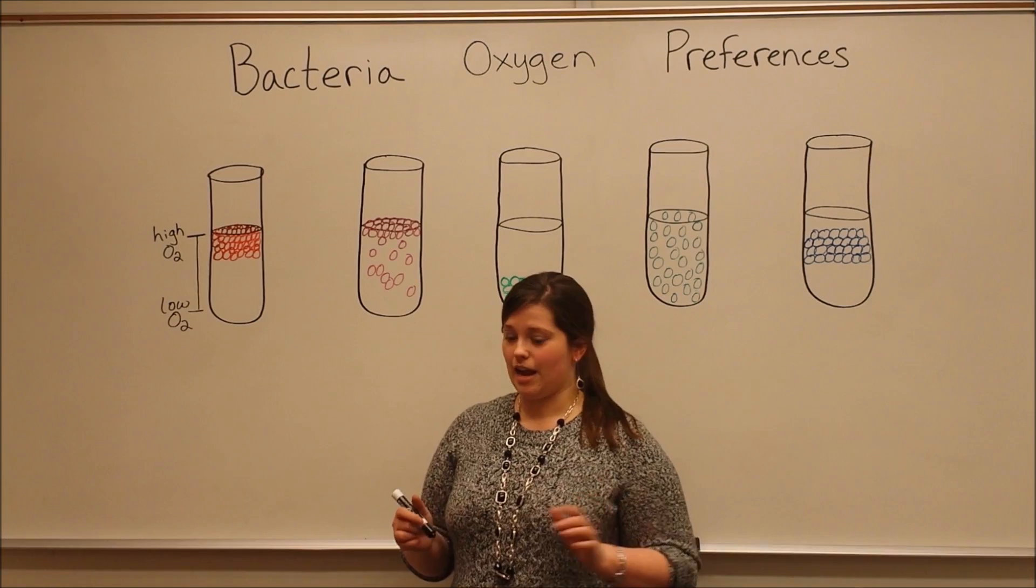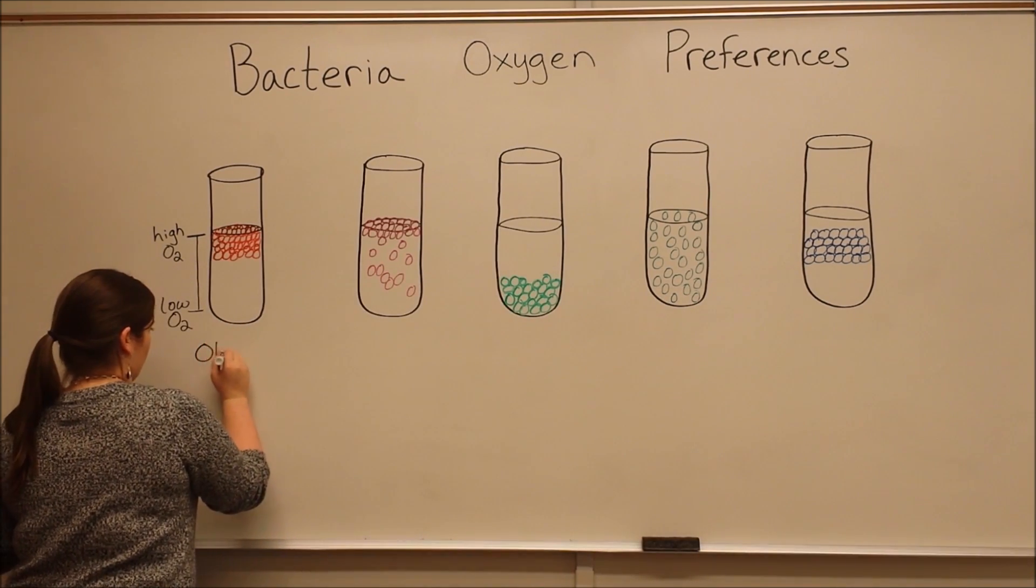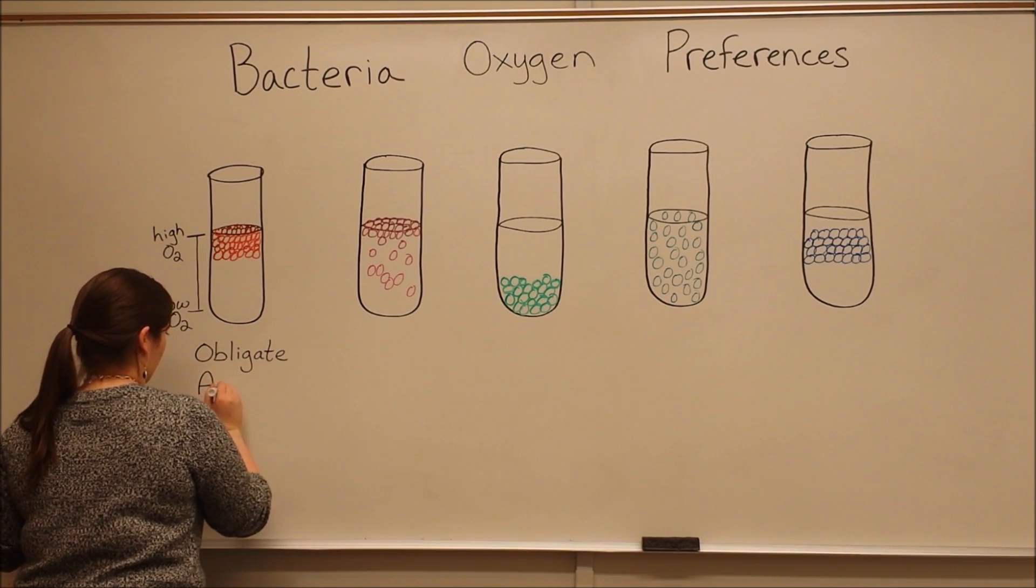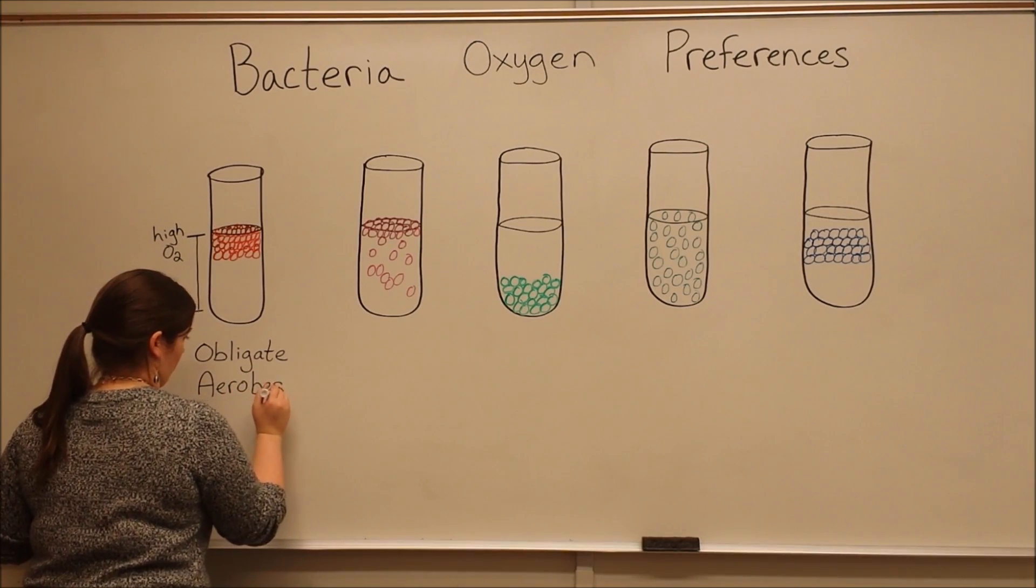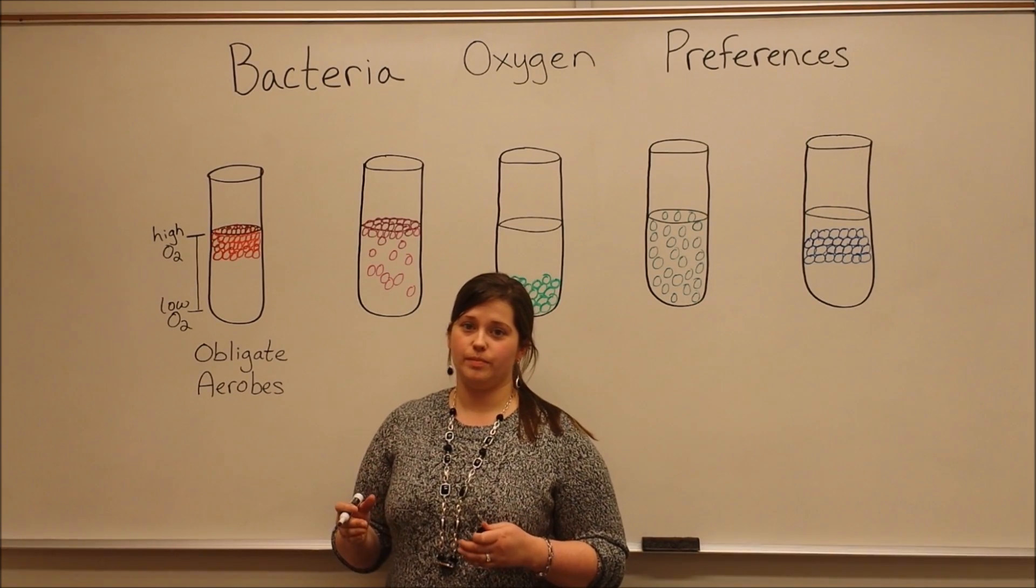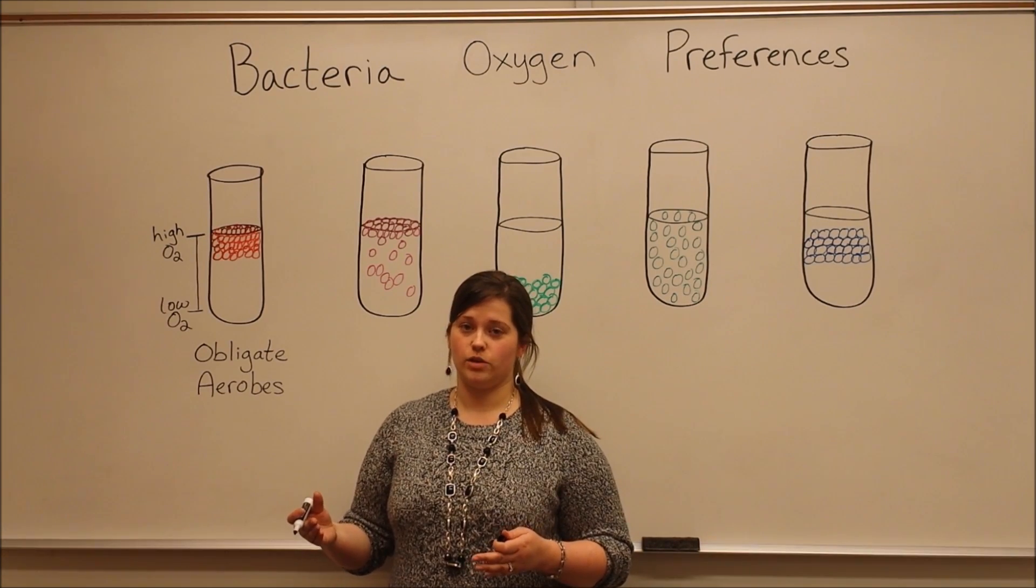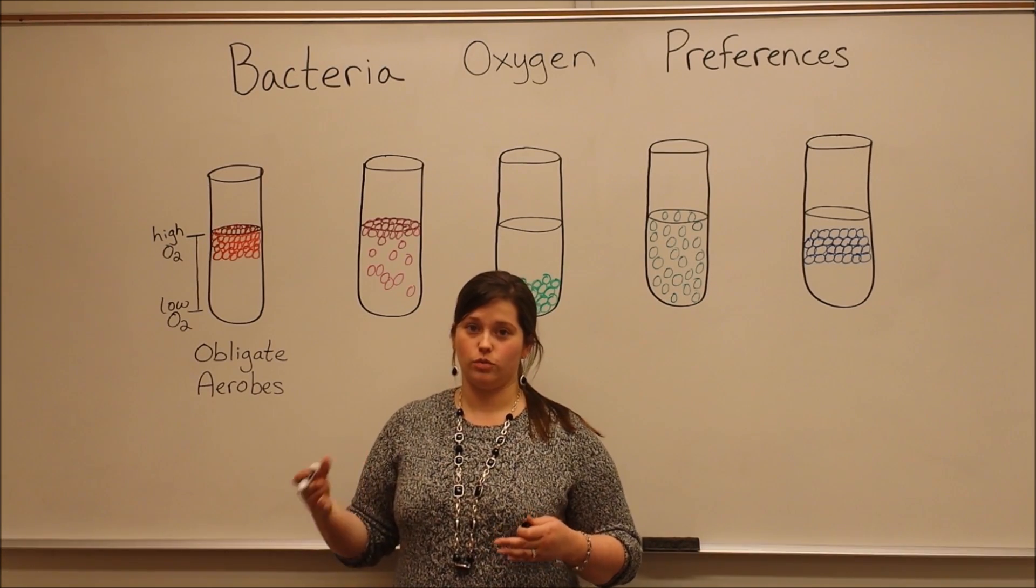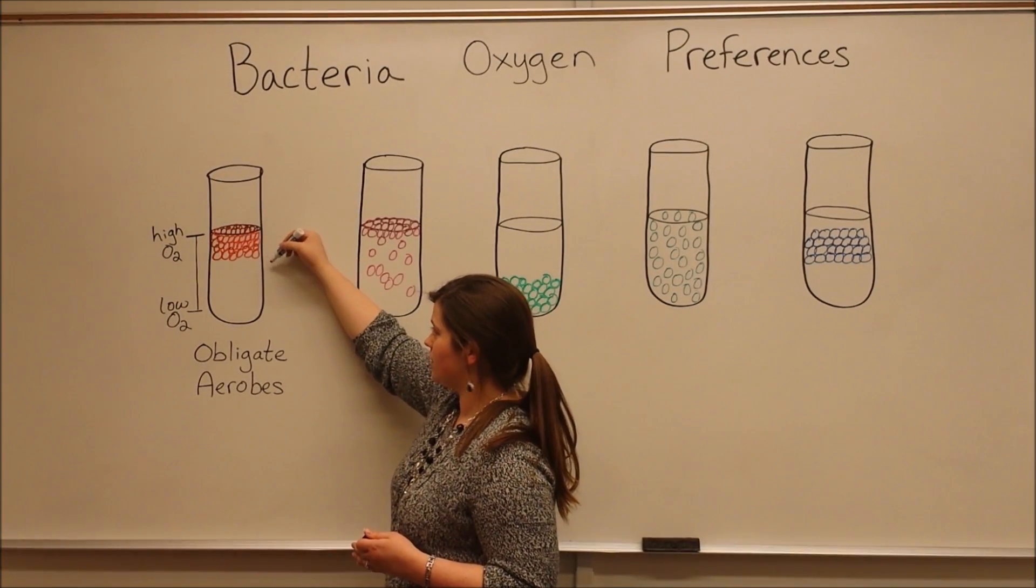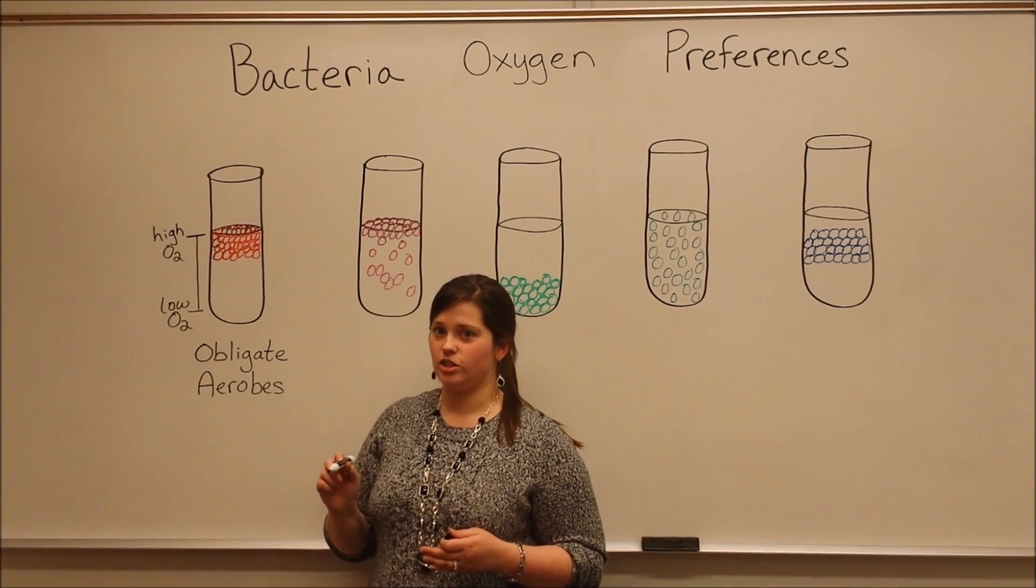First, we'll talk about obligate aerobes. Obligate aerobes are bacteria that require oxygen. They need oxygen in order to generate energy for the cell, in order for it to be healthy and to grow and to replicate. So obligate aerobes are going to grow only in the top portion of the culture media, where it meets the air, where we have a high concentration of oxygen.